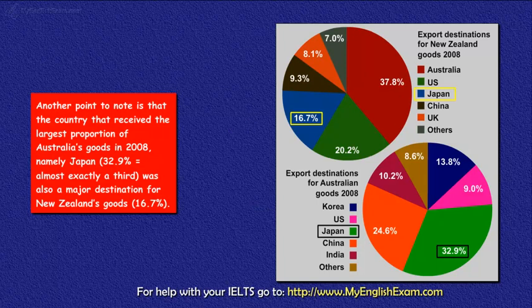Another point to note is that the country that received the largest proportion of Australia's goods in 2008, namely Japan at 32.9% — almost exactly a third — was also a major destination for New Zealand's goods, at 16.7%.